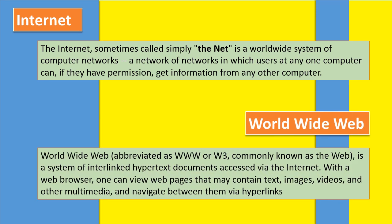World Wide Web is abbreviated as WWW or W3, commonly known as the web. It is a system of interlinked hypertext documents accessed via the internet. With a web browser, one can view web pages that may contain text, images, videos, and other multimedia, and navigate between them via hyperlinks.